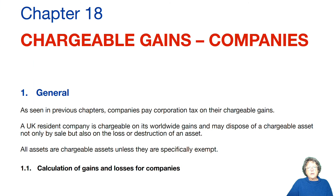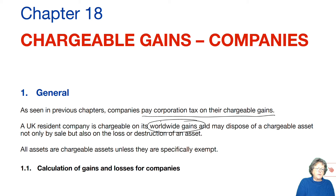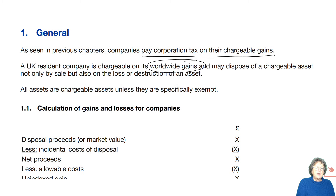In this next chapter for companies, we're going to look at chargeable gains. We call them chargeable gains and not capital gains, because companies do not pay capital gains tax. They pay corporation tax on their chargeable gains — on their worldwide gains if they are UK resident — not only on sale, but also on loss and destruction. It's more likely you'll get a sale; you're unlikely to get the loss or destruction.